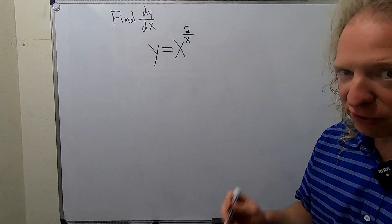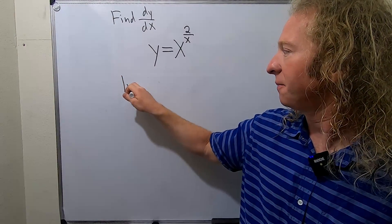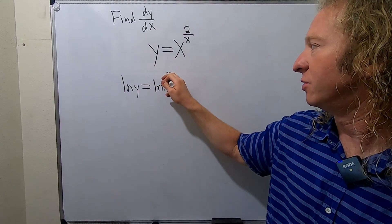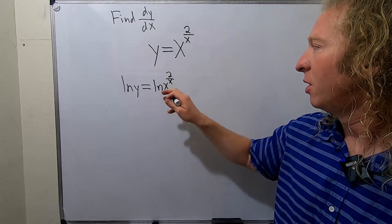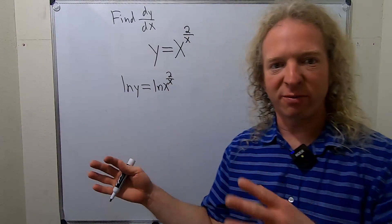So how do you do it? The first thing you do is take the natural log of both sides. So ln of y equals ln of x to the 2 over x. So the very first step when you're learning logarithmic differentiation is take the natural log of both sides.